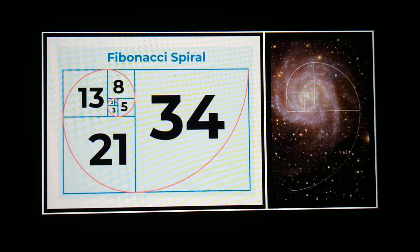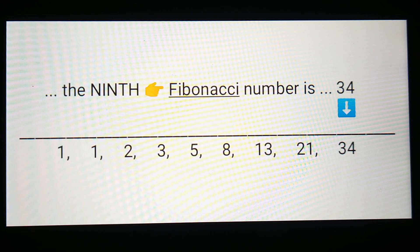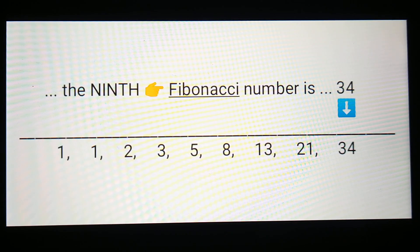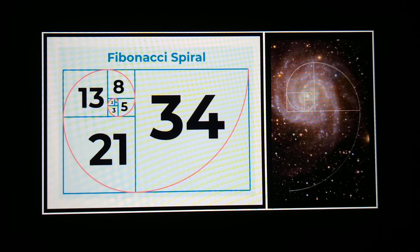If you look at the Fibonacci sequence, technically zero is in the sequence, but imagine zero is the starting point. Then you jump to the first Fibonacci number from zero: one. The next is one, then two, then three, then five, then eight, then 13, then 21, then 34. So 34, if we don't include zero, is the ninth Fibonacci number.